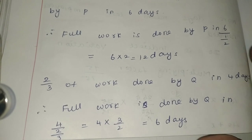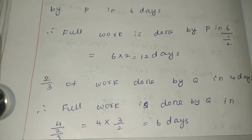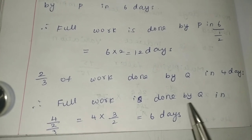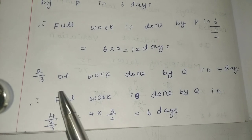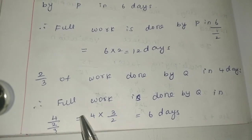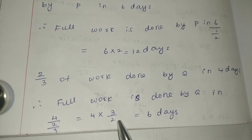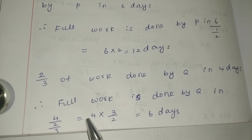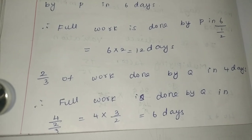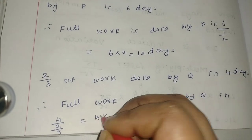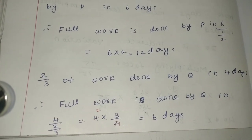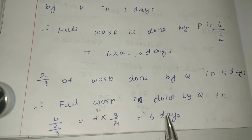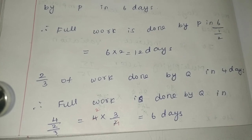Q does 2/3 of the work in 4 days. So full work is done by Q in 4 divided by 2/3. Taking the reciprocal, 4 into 3/2 equals 12/2, so Q does the full work in 6 days.